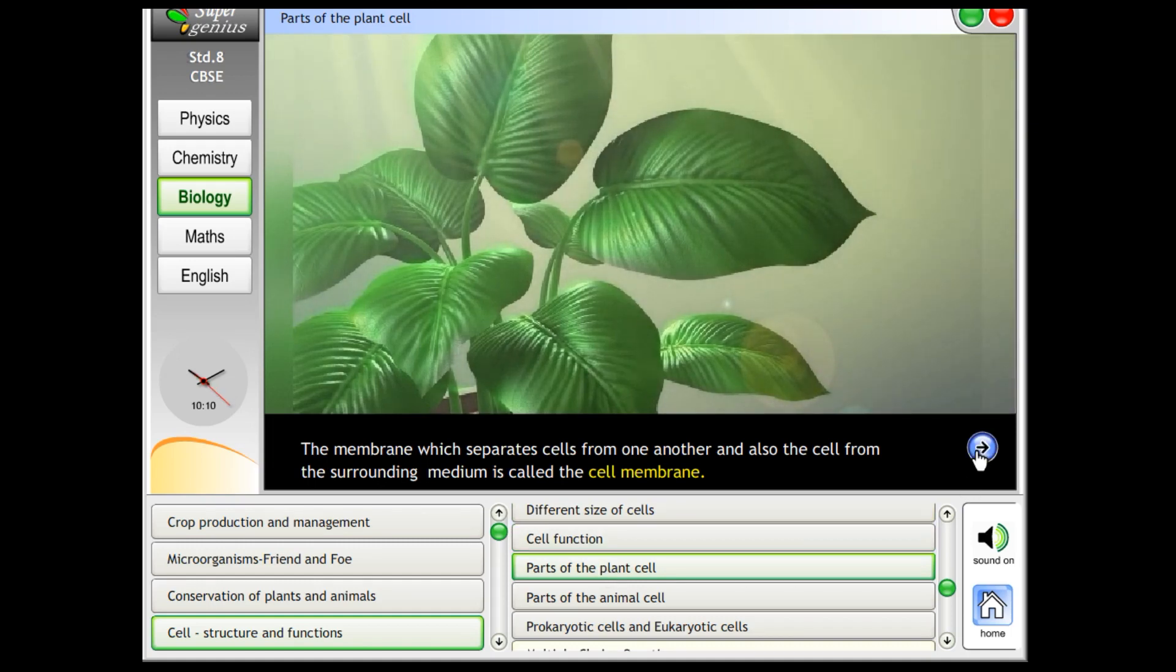Parts of the plant cell. The membrane which separates cells from one another and also the cell from the surrounding medium is called the cell membrane.